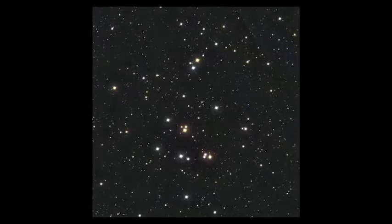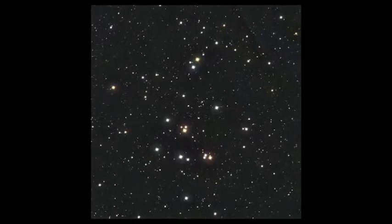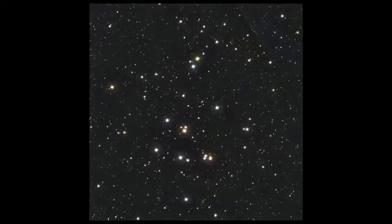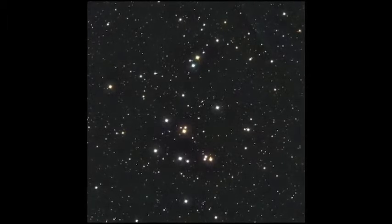It is one of the first objects Galileo observed with his telescope in 1609. He made out 40 stars. Today, we know there are over a thousand. Over 60% of the stars in the beehive are red dwarfs, and about 30% are similar to our sun.